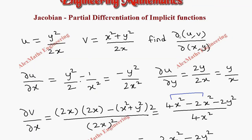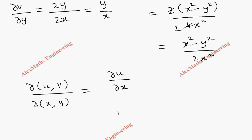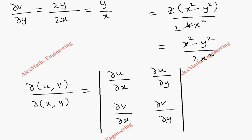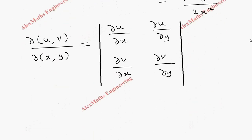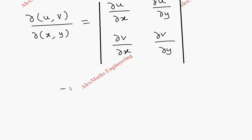Now we evaluate the Jacobian ∂(u,v) / ∂(x,y). By formula, this equals the determinant with ∂u/∂x and ∂u/∂y in the first row, and ∂v/∂x and ∂v/∂y in the second row. Substituting: ∂u/∂x is minus y² / 2x², so the first element is −y² / 2x².